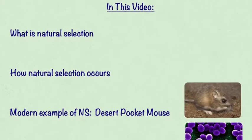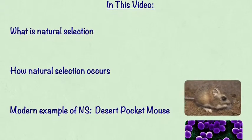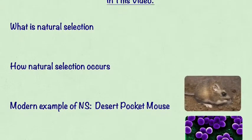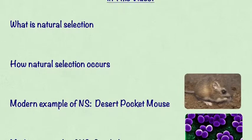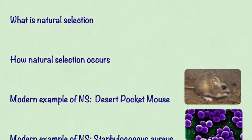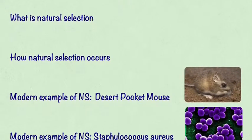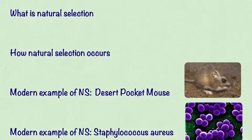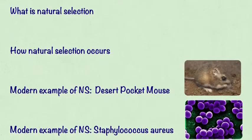In this video, we learnt about what natural selection is, how it occurs, and modern examples of natural selection — the desert pocket mouse and Staphylococcus aureus. We hope you enjoyed.